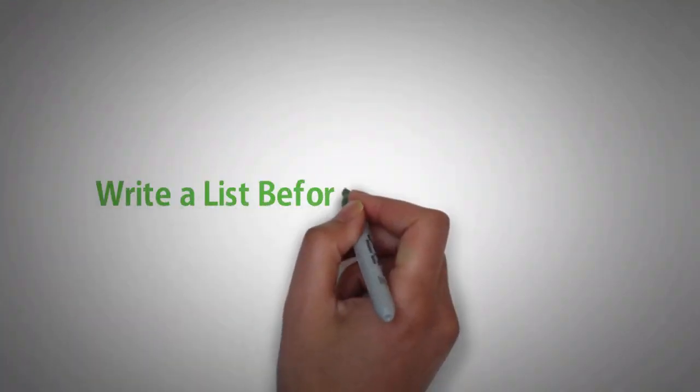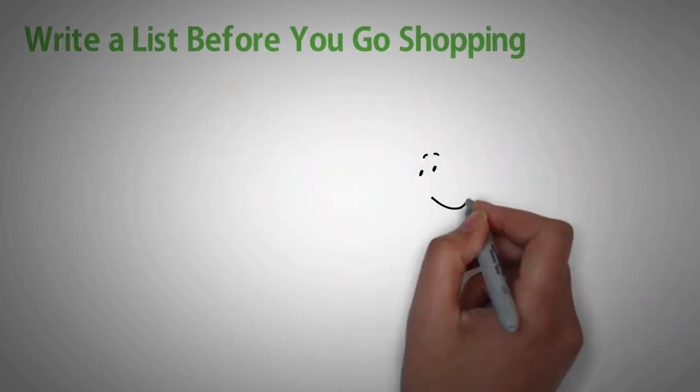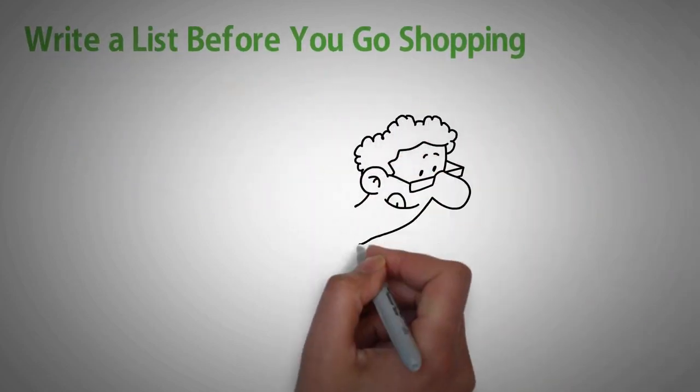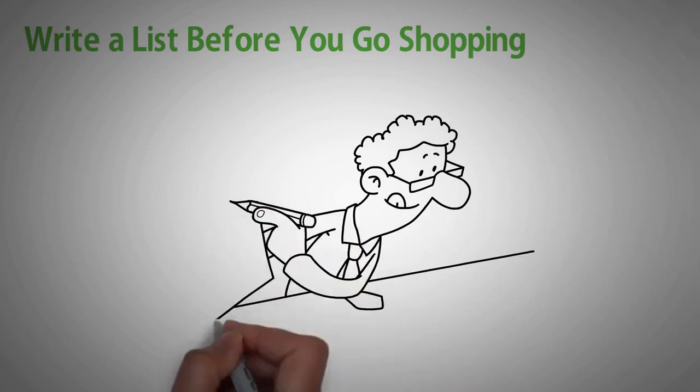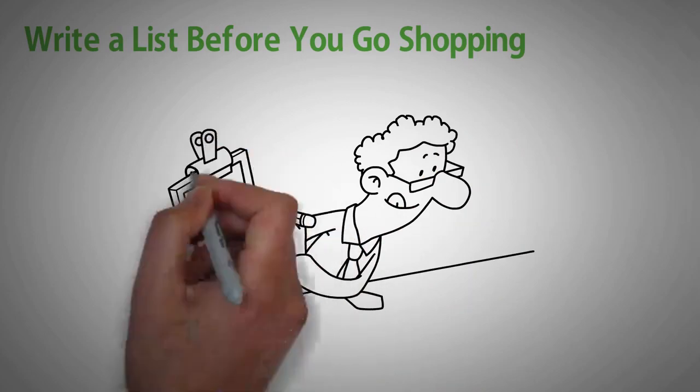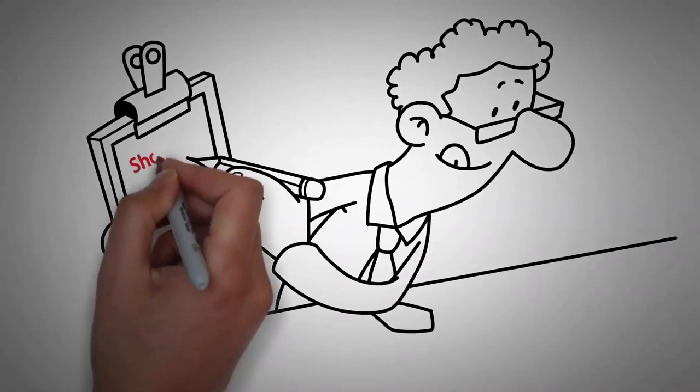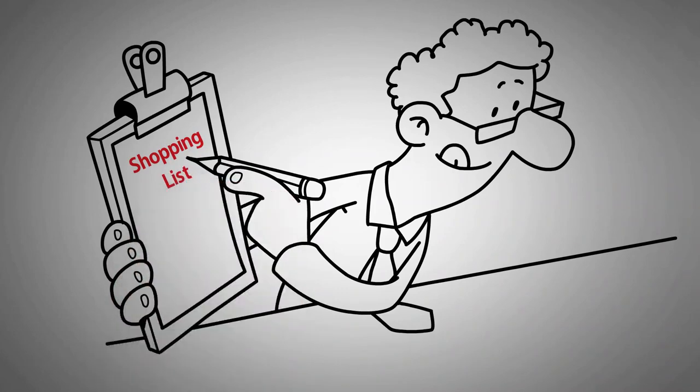Write a list before you go shopping, and stick to it. One of the easiest ways to save money is to only shop when you have a list. Because when you're without one, you typically end up making impulse buys and unplanned purchases, all things that cost money.